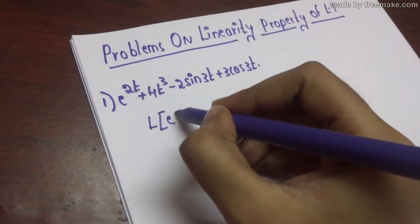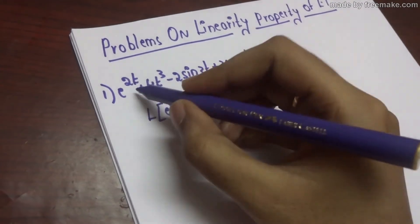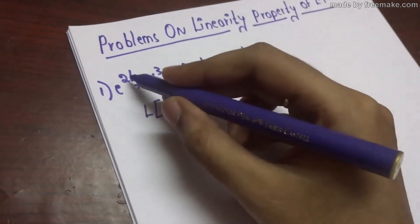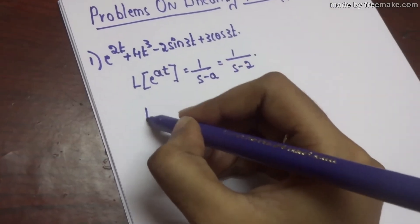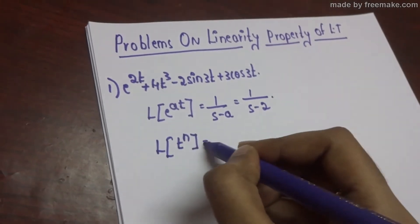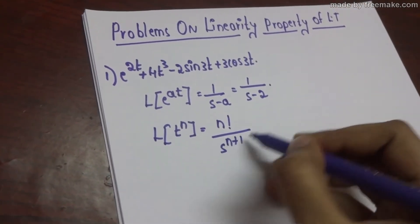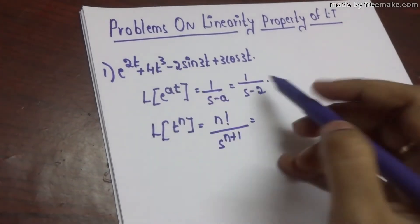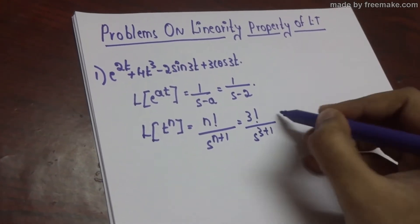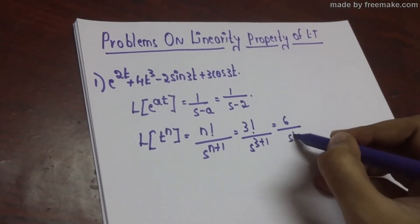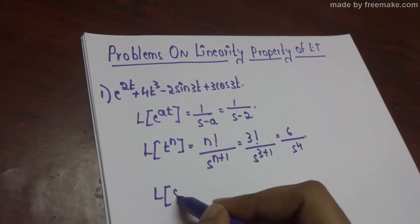The Laplace of e power at formula is 1 by s minus a. Here the given expression is e power 2t, so a is 2, giving 1 by s minus 2. The Laplace of t power n formula is n factorial by s power n plus 1. Here n is 3, so it is 3 factorial by s power 4, which equals 6 by s power 4.